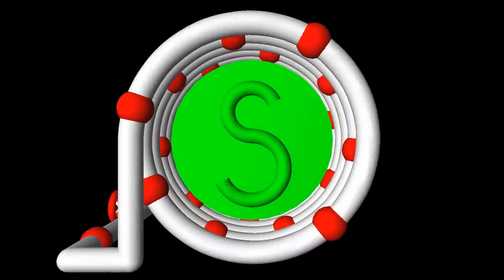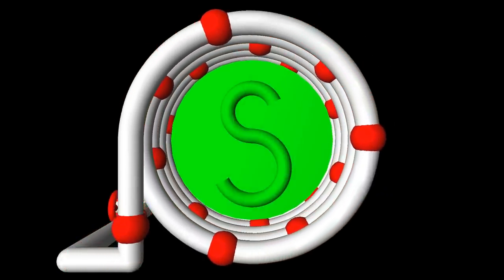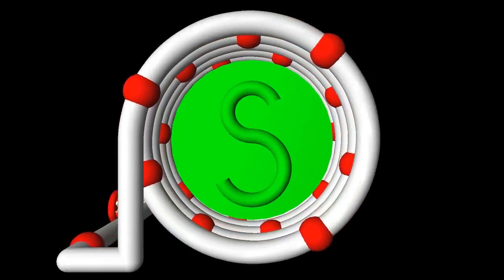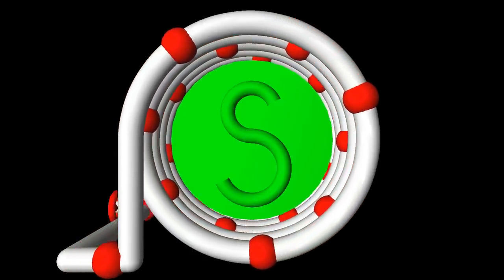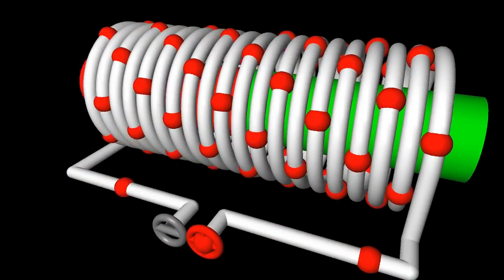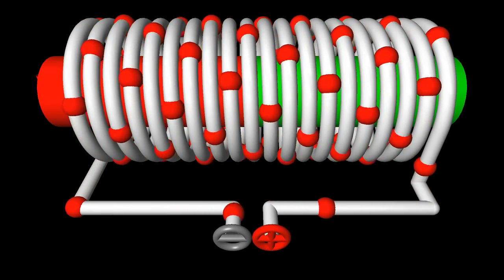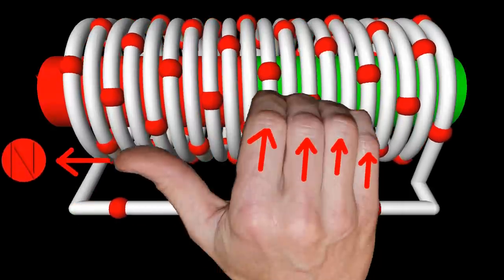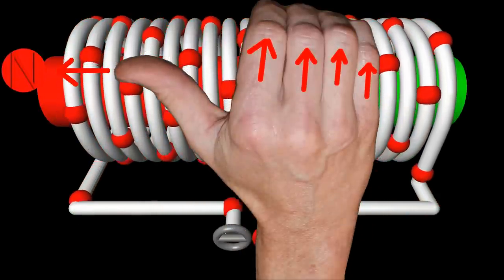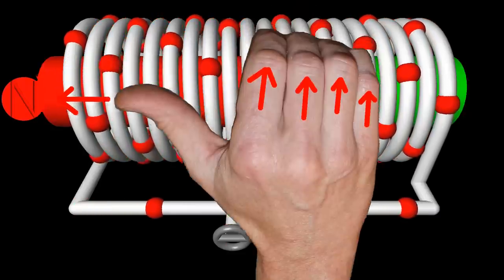When looking on the opposite end of the coil, the current flows clockwise, thus this is where the magnetic south pole is located. You can use your right hand to figure out where the magnetic north of an electromagnet is formed. If you wrap your right hand around the wire or the solenoid with your fingers in the direction of the conventional current, your thumb points towards the magnetic north pole.